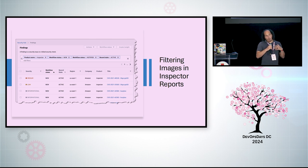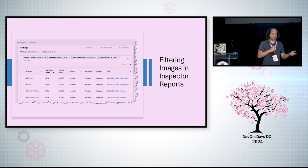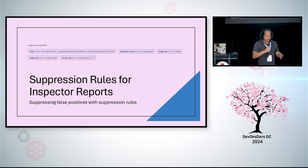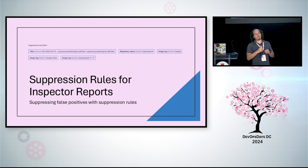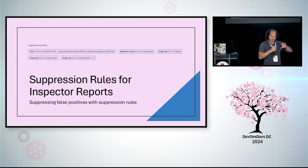We don't want all of our images in the container registry showing up in that report, so we filter them down — Inspector provides this functionality for us. We only include the production images in that report. We've also encountered false positives, and we need the ability to filter those out as well. To do that, we use suppression rules, and those get excluded from the report that gets emailed over to HHS.